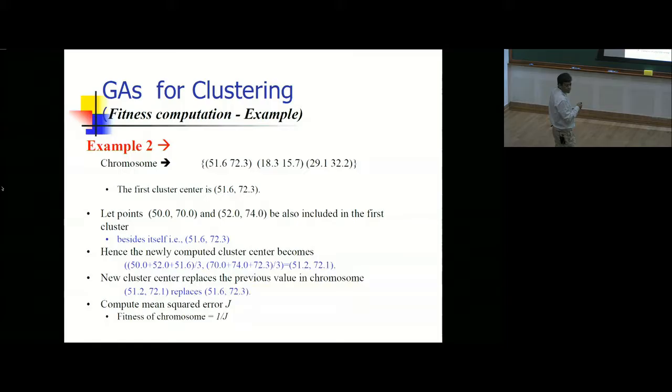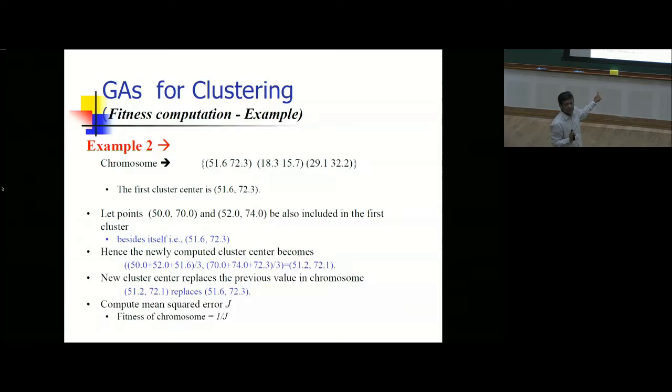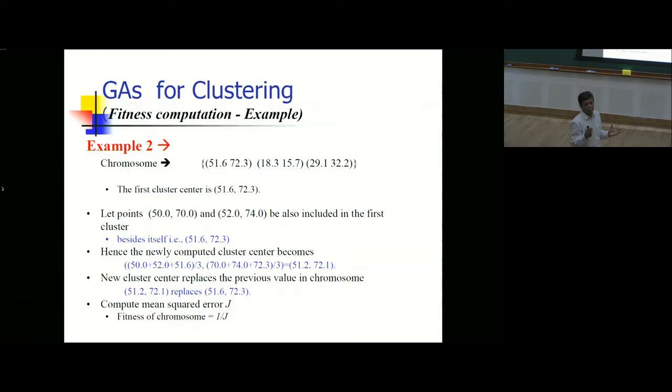Every time you compute fitness and accordingly determine which chromosome is good or bad. Crossover and mutation are applied accordingly. The strategy: define your chromosome, define your objective, then be careful about crossover — don't do arbitrary crossover. Crossover will exchange centers between chromosomes, giving new candidate lines or cluster configurations.